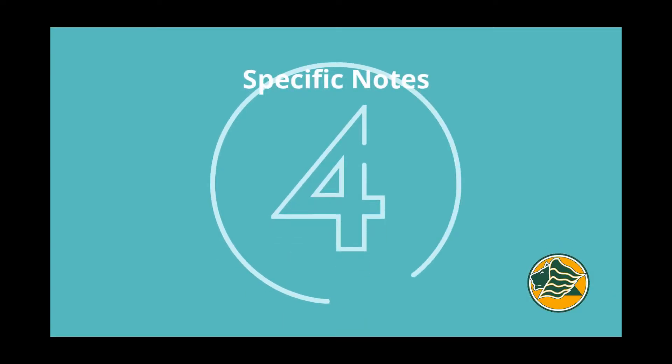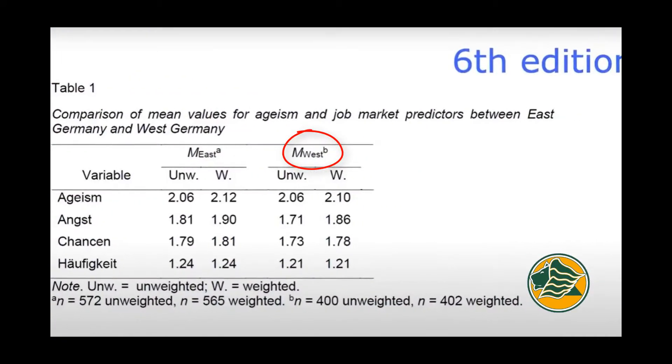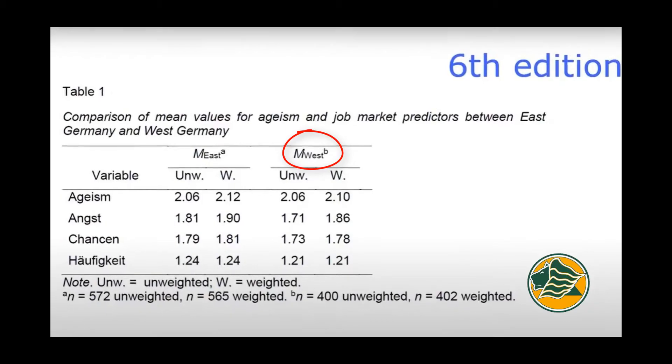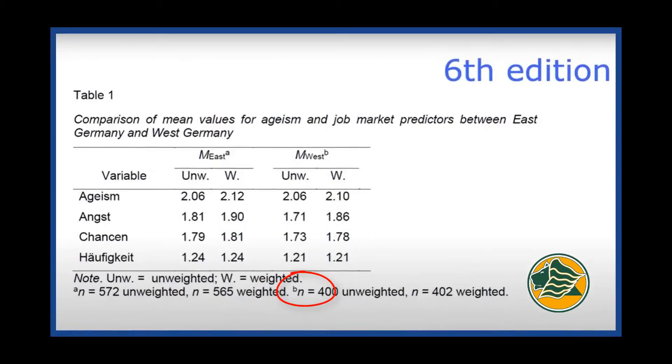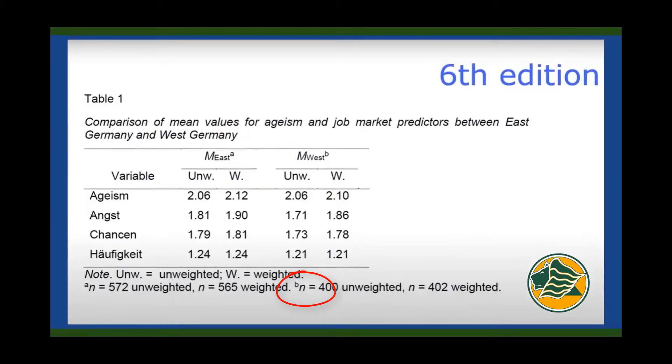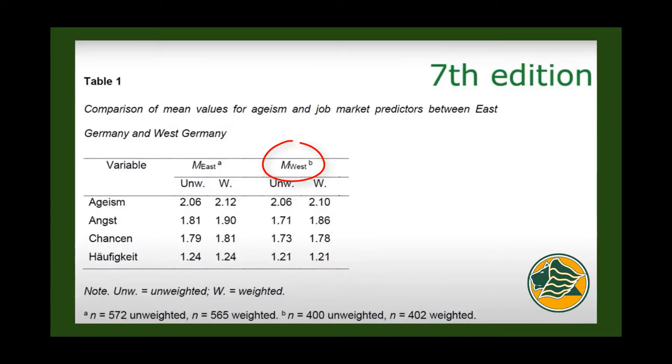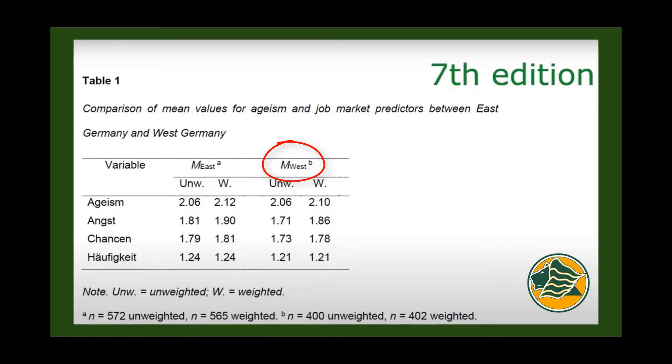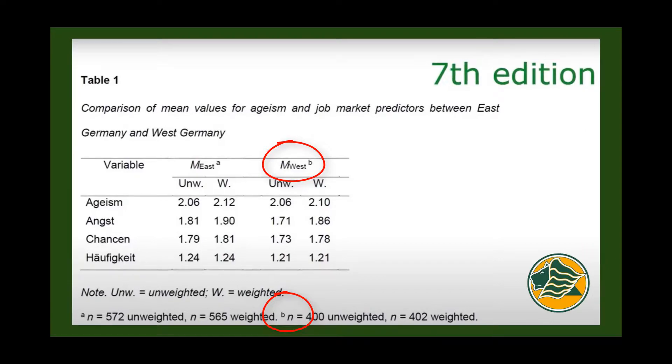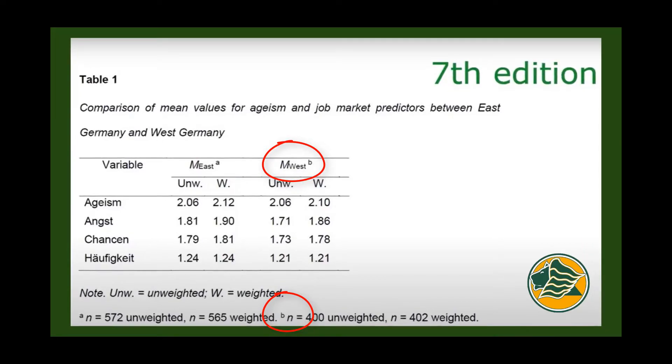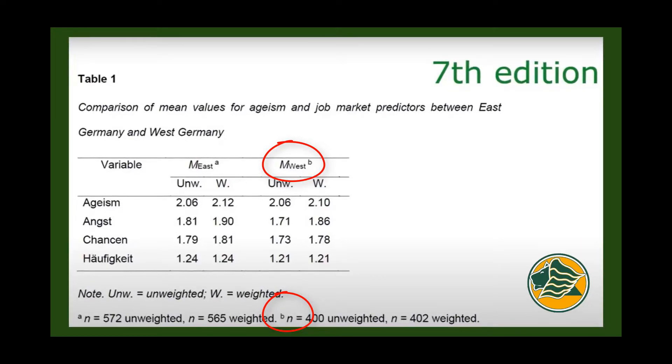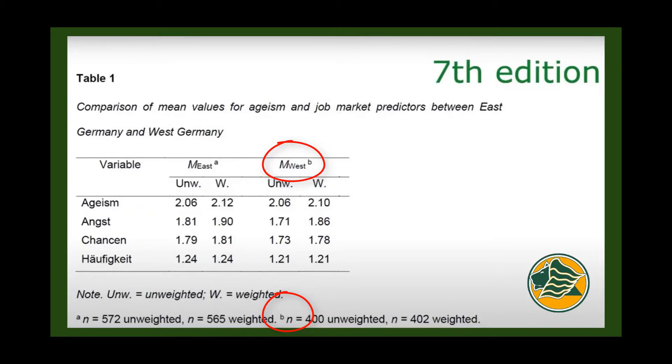The fourth change is in specific notes. The subscript letter for the note followed directly after the content of the cell with no space. And below in the note, there was no space between the subscript letter and the note. In APA 7, there is now a space between the content and the superscript letter. There is also a space in the notes between the superscript letter and the note. Are you having fun yet?